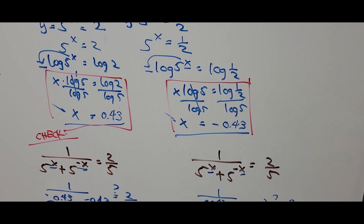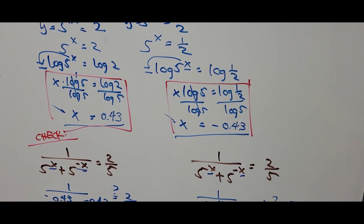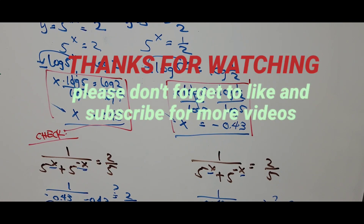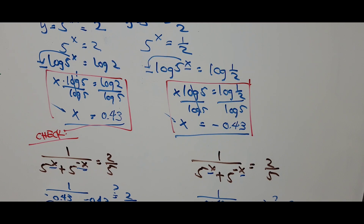The exact values of x are log of 2 divided by log of 5, and log of one half divided by log of 5. That's all for now. For those new to my channel, please don't forget to like and subscribe for more videos. Thank you for watching — I'll see you in the next video. Have a great day everyone, bye!